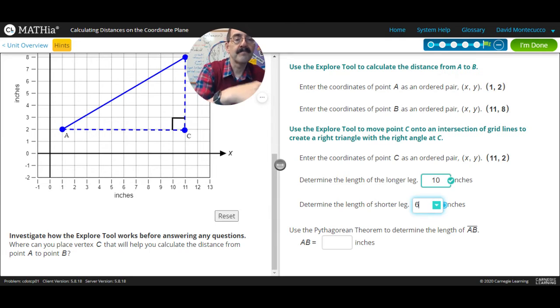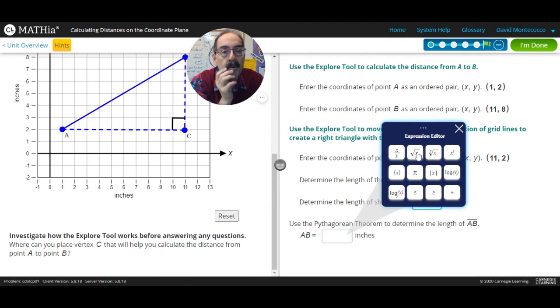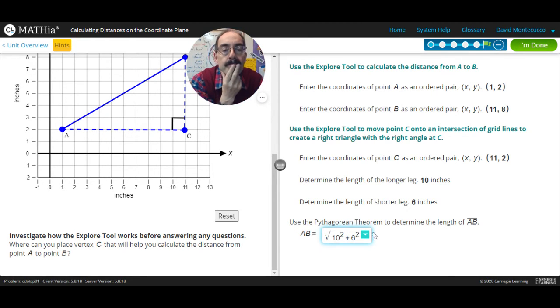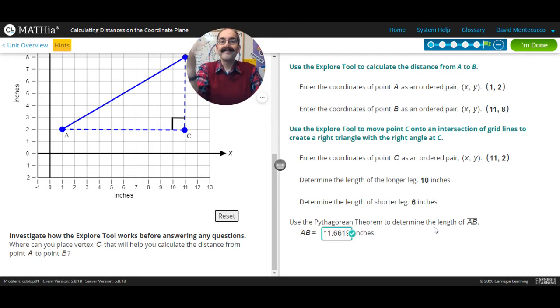And then we got a 6, enter. And then using the Pythagorean theorem. Now we're going to put the whole thing in. And we got 10, shift, squared. And then plus 6, shift, squared, enter. And we'll be right on. So hopefully that was helpful. A little Pythagorean theorem thing for distance. All right. Let's move on.